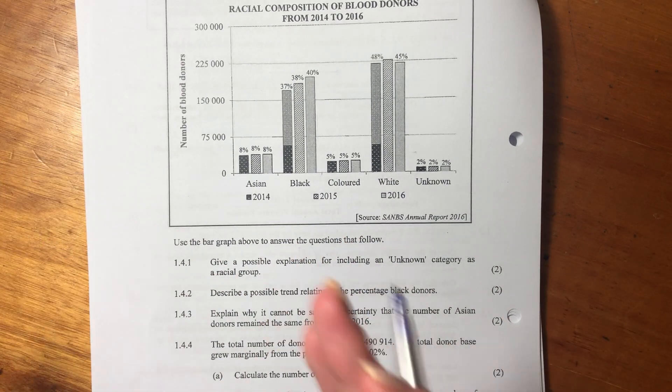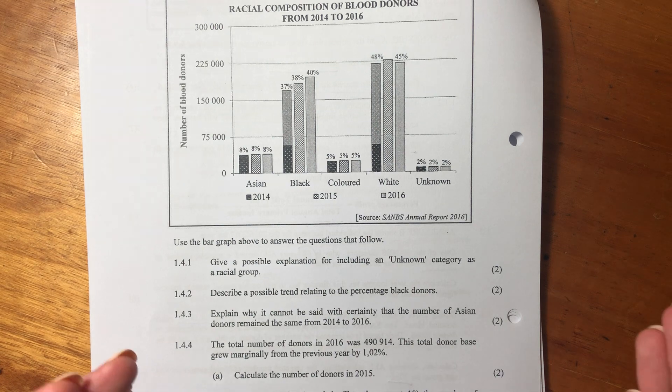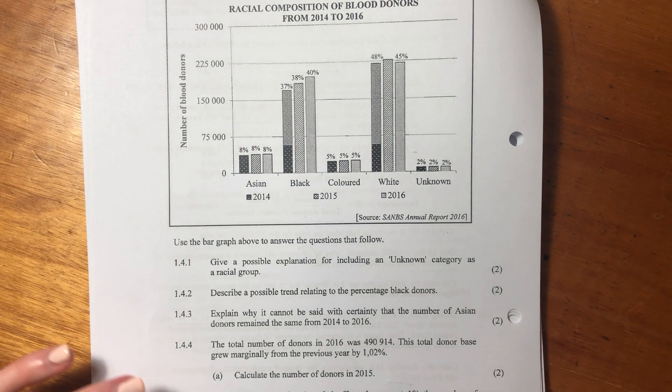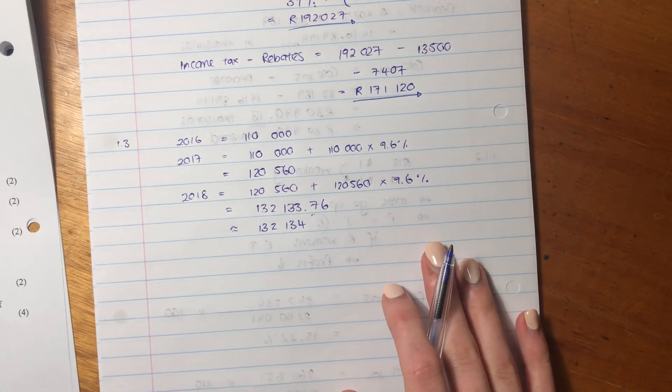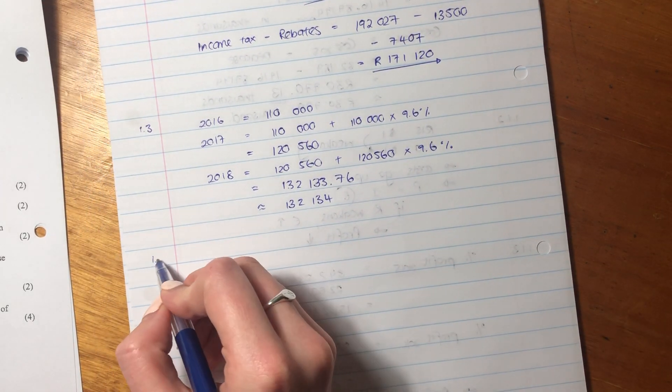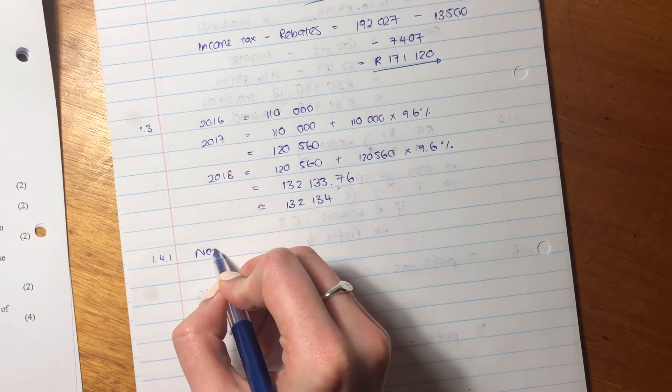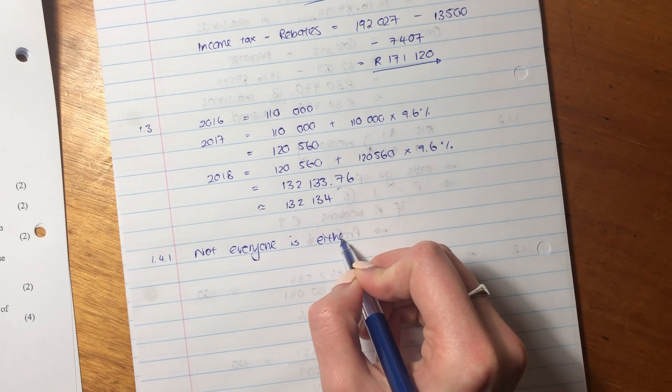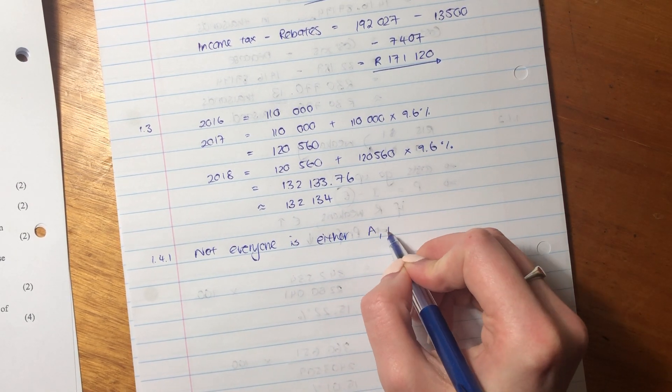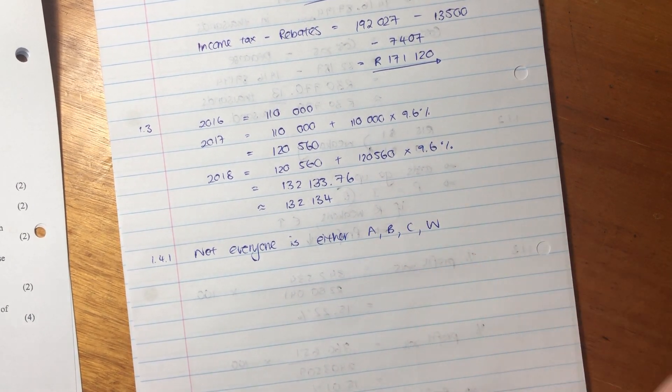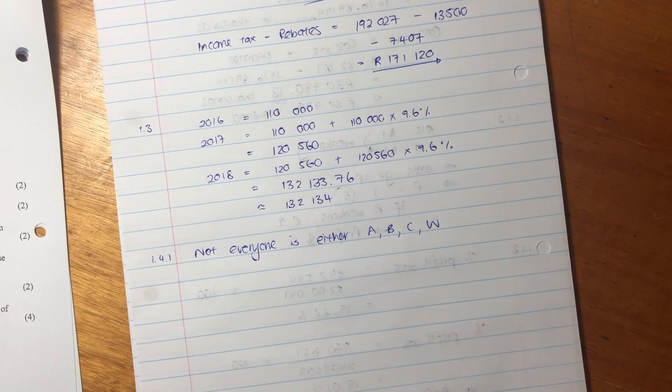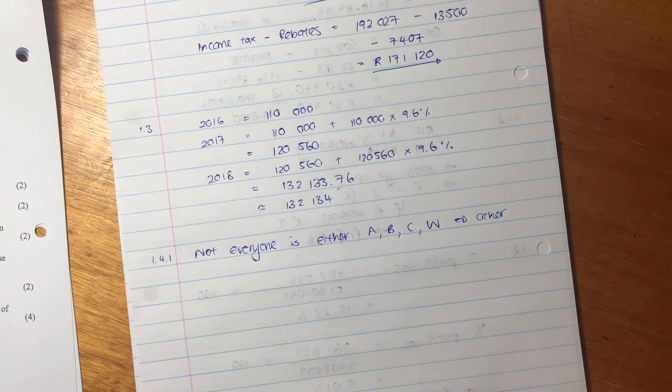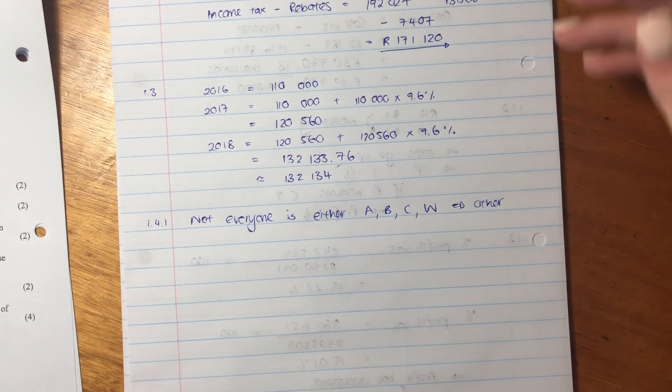So the obvious one is not everyone is Asian, black, colored, or white. Another one is sometimes people don't indicate their race. That's their right not to indicate their race. So you can say here, there's many things you could say, but I'm just going to say not everyone is either Asian, black, colored, or white. There could be other.